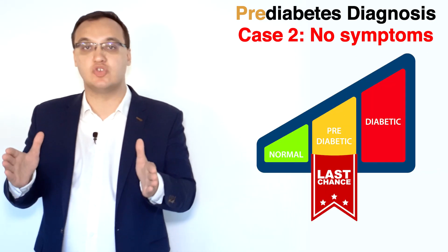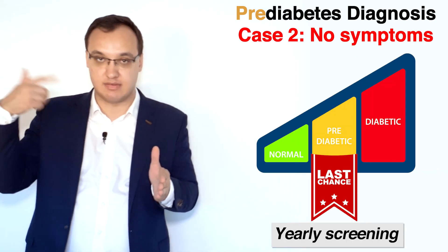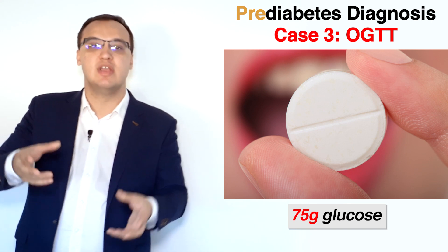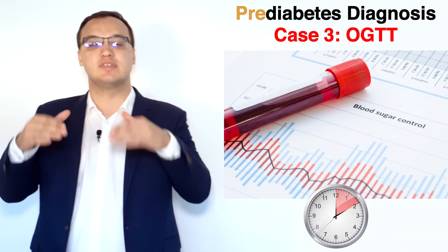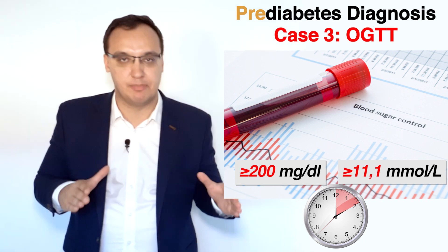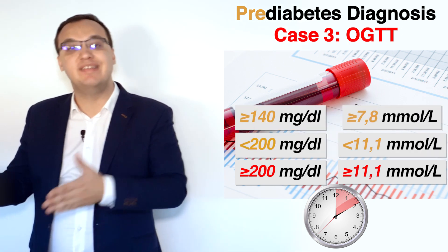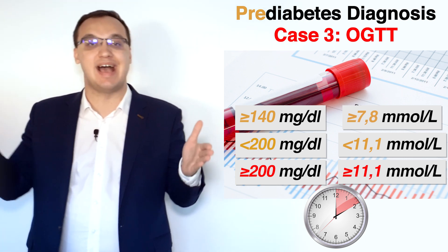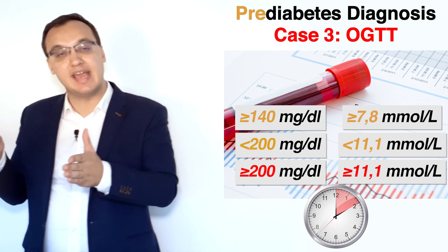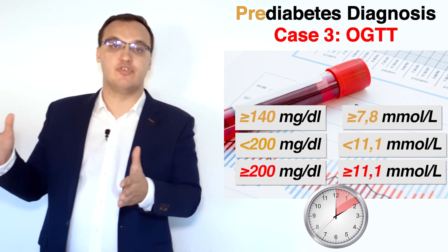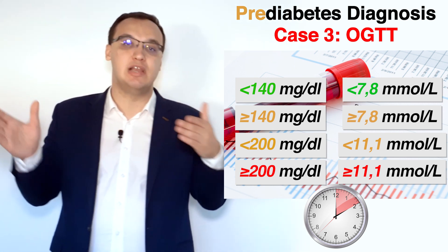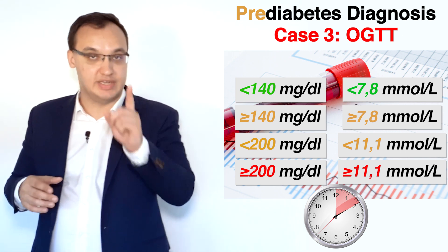Pre-diabetes values are very important because we need to screen patients yearly — please check the patient every year. Now for the third option, OGTT: we give 75 grams of glucose tablet, and after two hours we check levels. More than 200 mg/dL or more than 11.1 mmol/L is diabetes. Pre-diabetes is 140 to 199 mg/dL or 7.8 to 11.1 mmol/L. Everything below 7.8 mmol/L or below 140 mg/dL is normal.